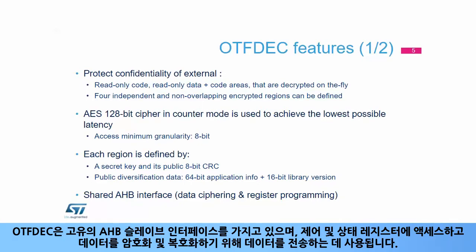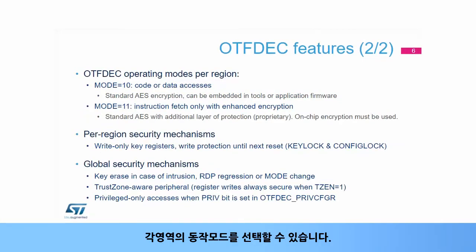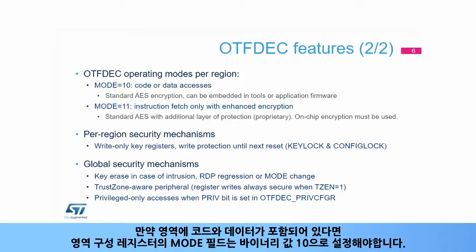The OTF-DEC has a unique AHB slave interface used to access control and status registers and also to transfer data to encrypt and decrypt. For each region, the operating mode has to be selected. If the region contains both code and data, the mode field of the region configuration register has to be set to binary value 1-0.